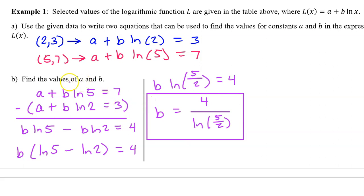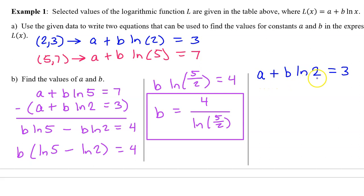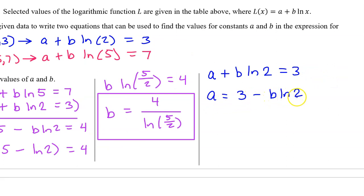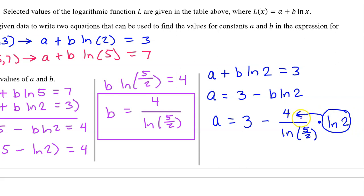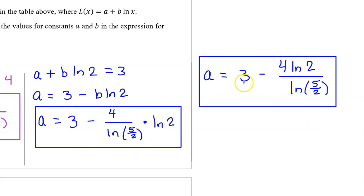Now we just have to find the value of a. Using either one of the original equations and substituting the known value of b, we get a plus b times the natural log of 2 equals 3. Subtracting b times the natural log of 2 from both sides gives a equals 3 minus b times the natural log of 2. We substitute the expression for b in, giving us the value of a. Both forms — with the natural log of 2 in the numerator or not — are valid answers.